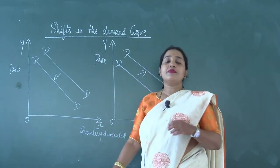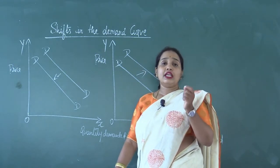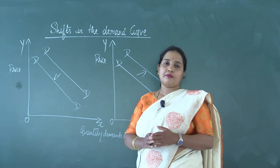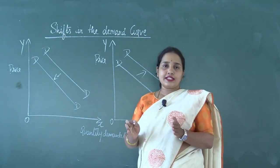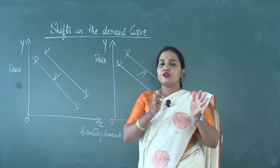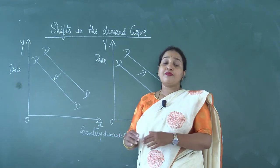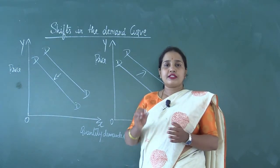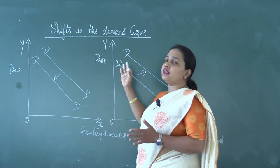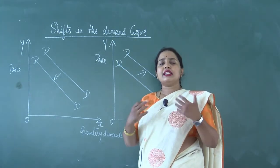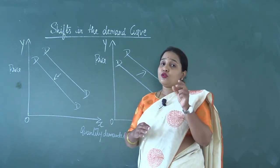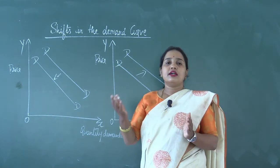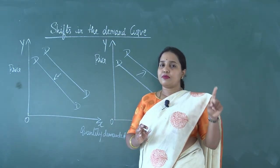Let us now understand how there will be a shift in the demand curve when any of the other factors changes. Let us first consider change in consumer's income. Keeping the prices of related goods and the taste and preferences of the consumer constant, when there is an increase in income, the demand for a good changes at each price, and hence there will be a shift in the demand curve. When it comes to consumer's income, we have to take two categories of goods: one is normal goods and the other is inferior goods.